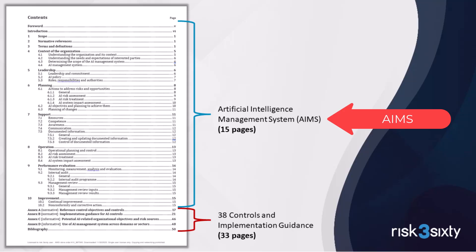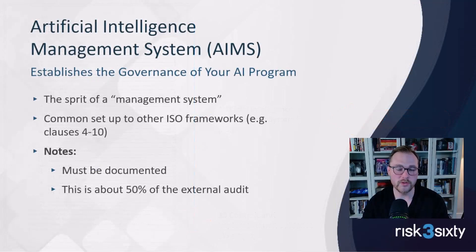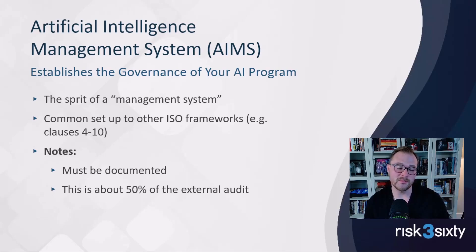You can think of the management system as establishing the governance structure to manage whatever you're trying to get certified. All ISO frameworks have this concept, and you'll also hear it called clauses four through ten — for example, ISO 27001 has clauses four through ten. That's the spirit of a management system.